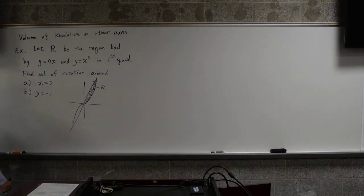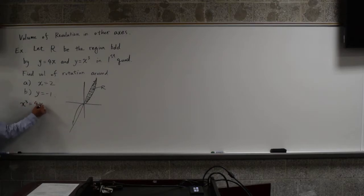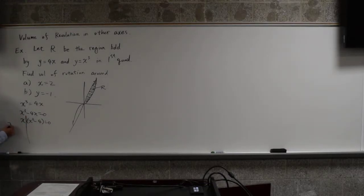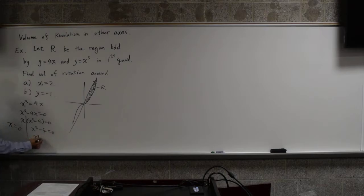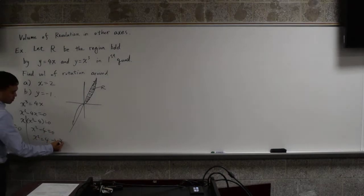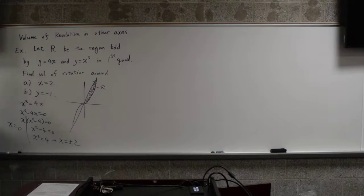We should also figure out when they meet each other. The place they meet is, if I set them equal to each other, x cubed equal to 4x. X cubed minus 4x equal to 0. Factoring the x out, I get x squared minus 4. So either x is 0 or x squared minus 4 is 0, in which case x squared is 4. That gives you x equals plus minus 2.